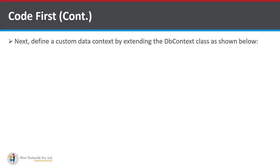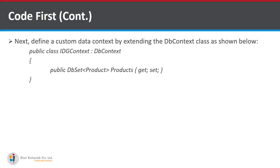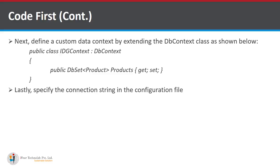Next, define a custom data context by extending the DbContext class. You create a DbContext class that inherits from DbContext, and inside it you declare a DbSet with the name of your class and its object. This connects your class and specifies the connection string in the configuration file. This is a very important part of the Code First approach.